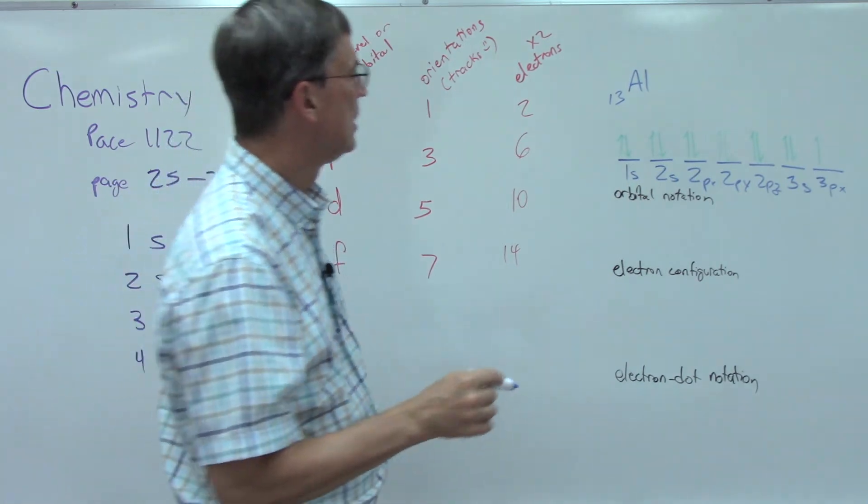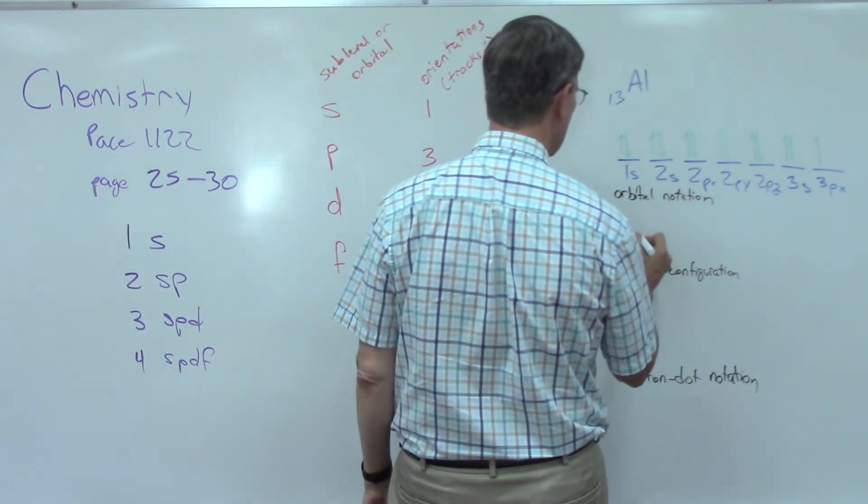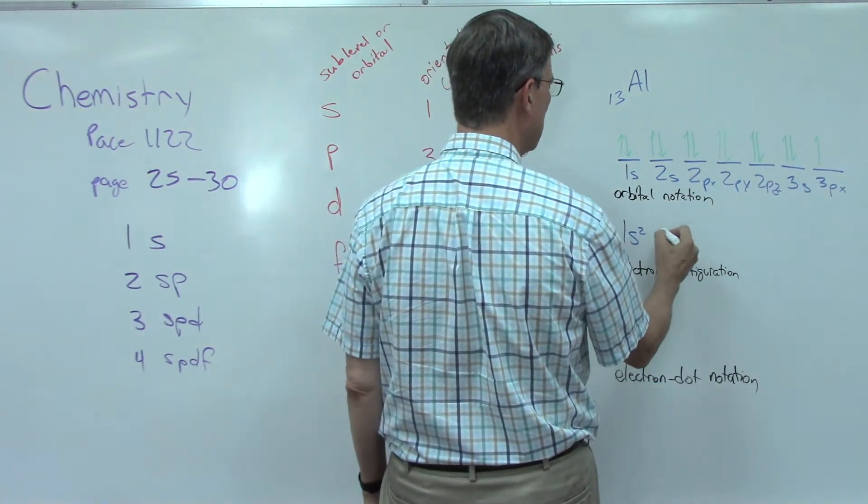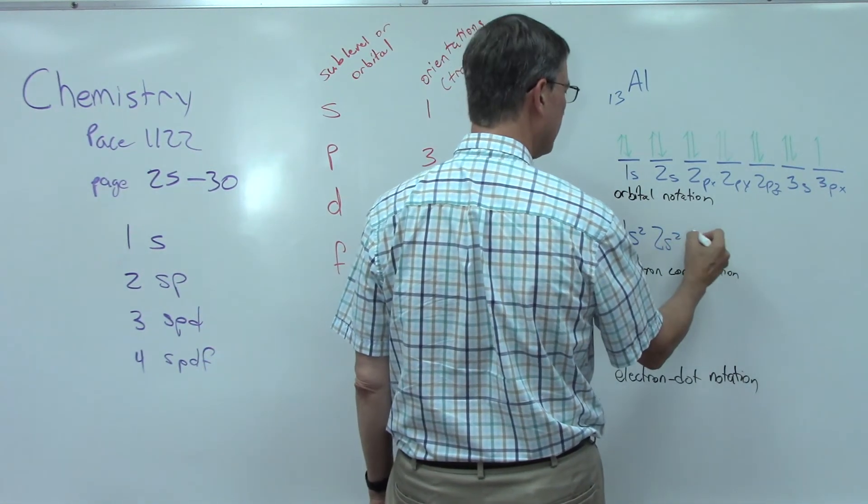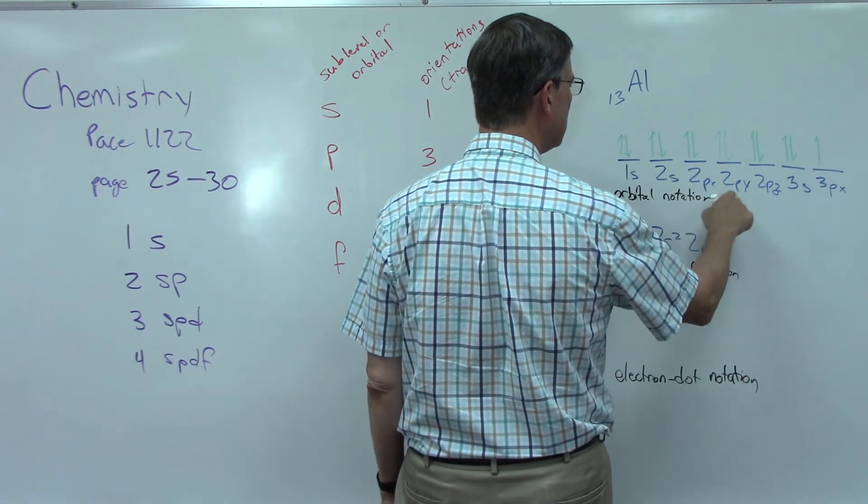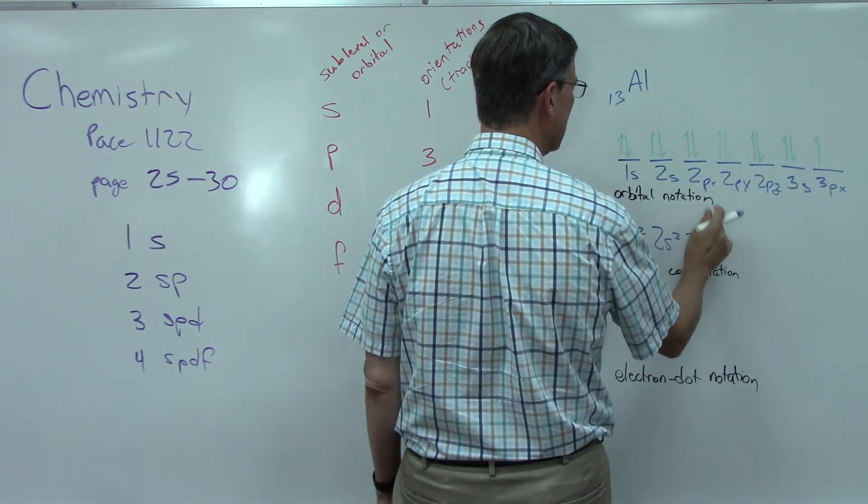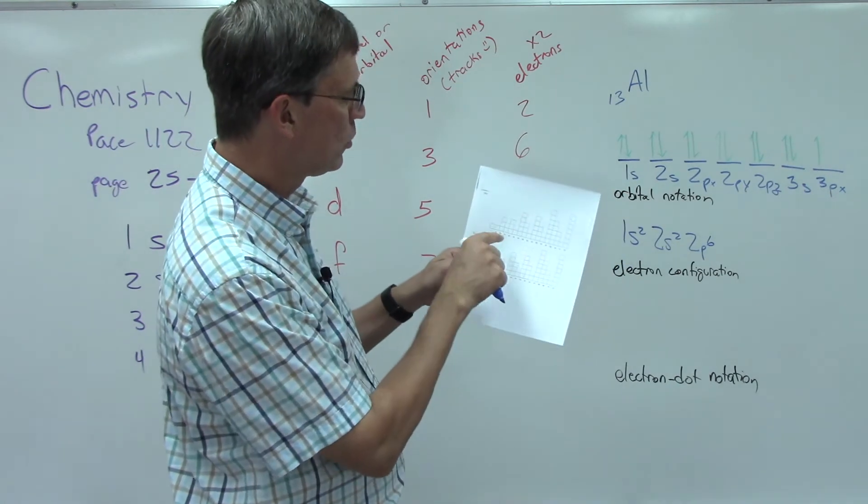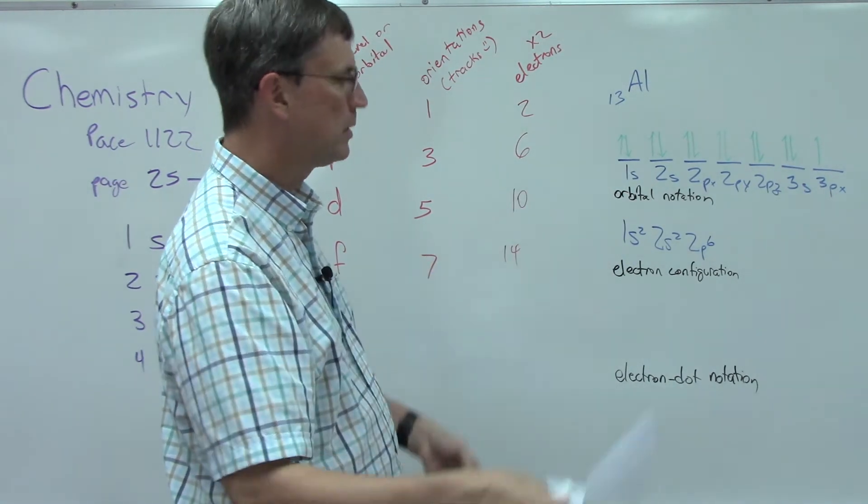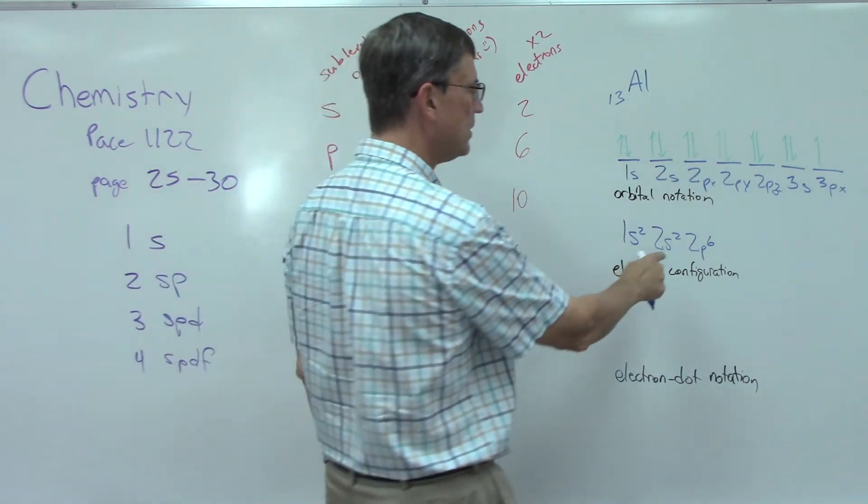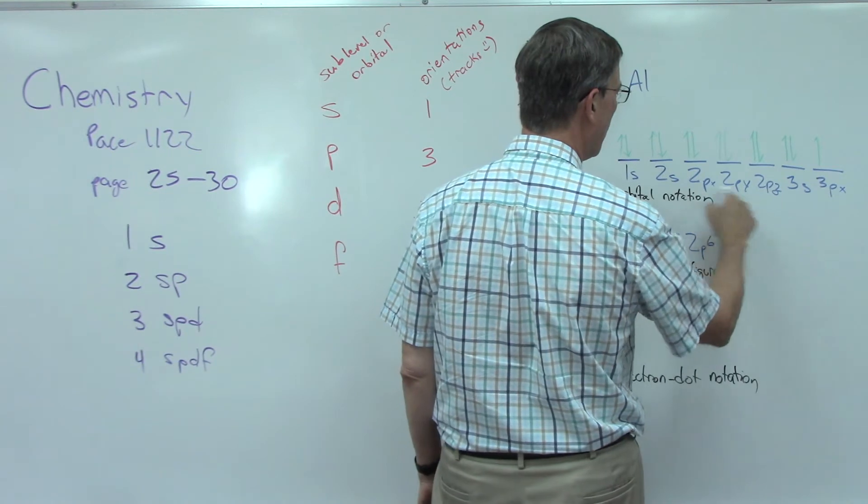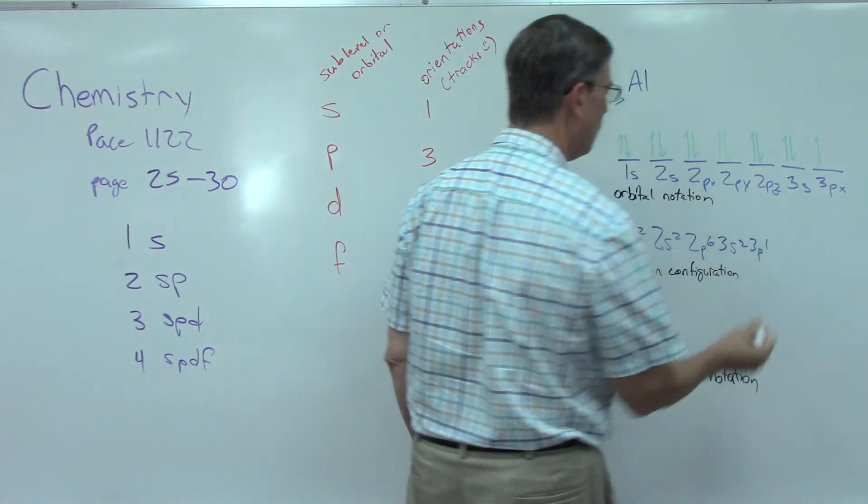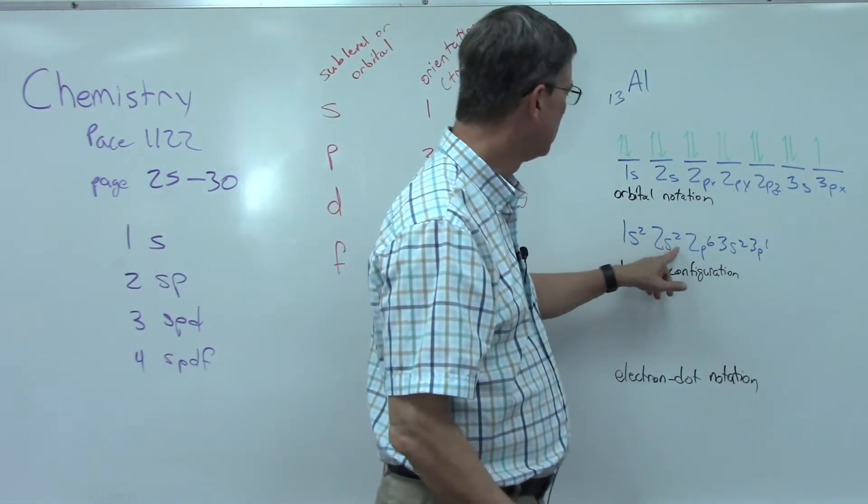So they're within each little suborbital, they're going opposite directions. Now how could I write this in what's called electron configuration? It's a shortcut way of writing. The 1s, there are two electrons, so I put a superscript of two. 2s two. Now I'm going to put all these p's together and there are six, okay? So I don't have to separate out the x, y, and z showing those orientations. By the way, on this chart, each of those orientations is represented by one of these boxes. But for the entire 2p, I can do up to six. So I'm going to just put a six here. Alright, 3s two, 3p one.